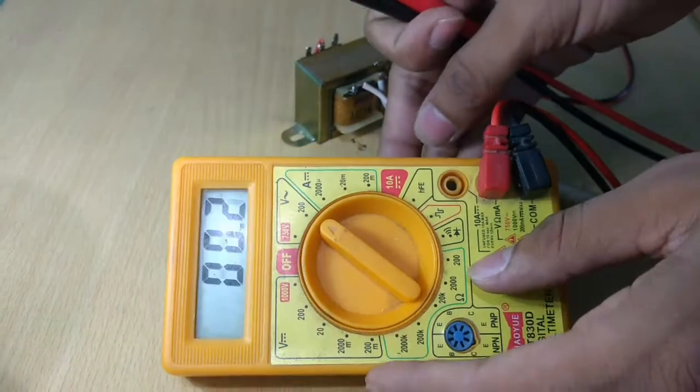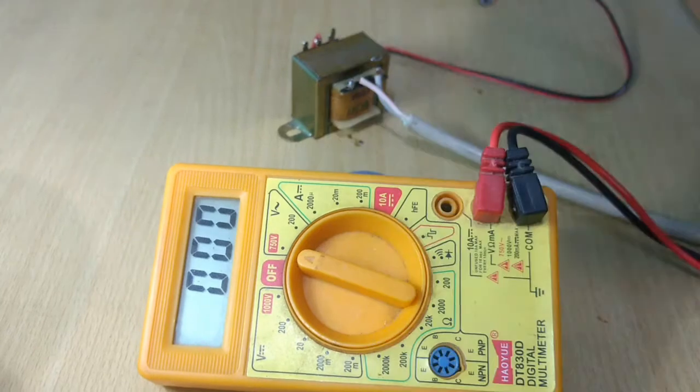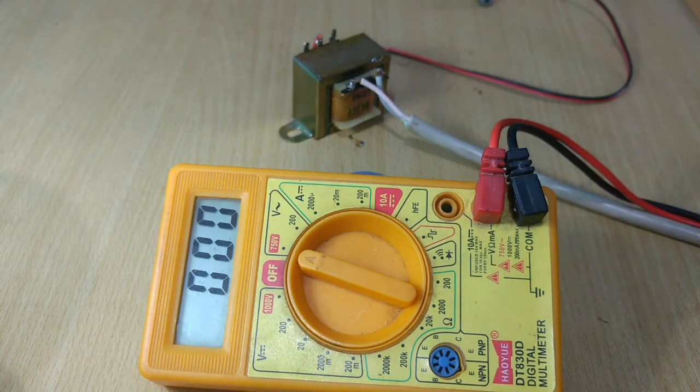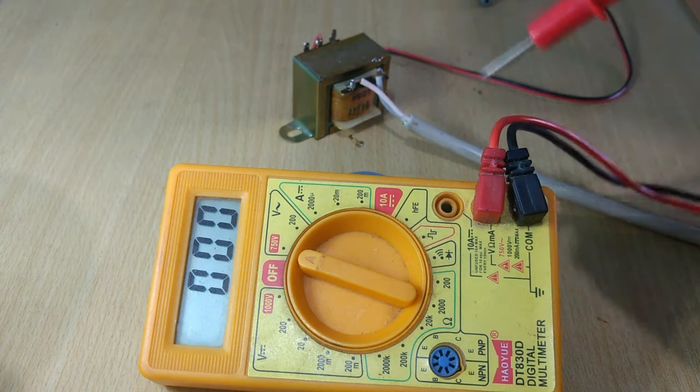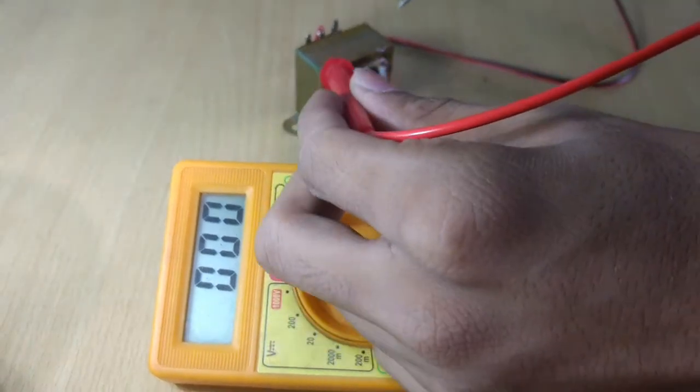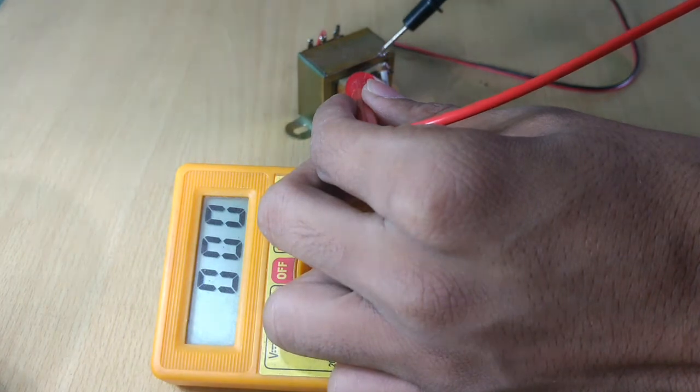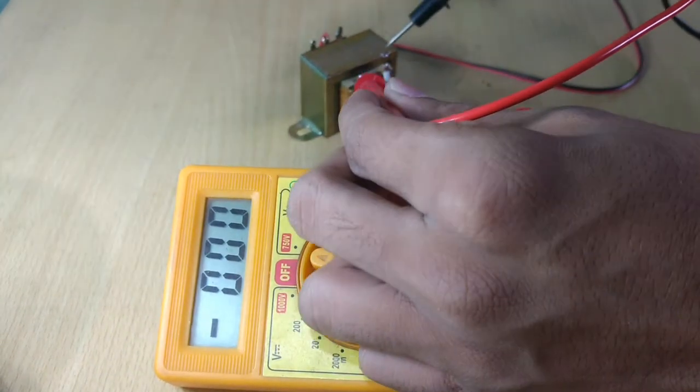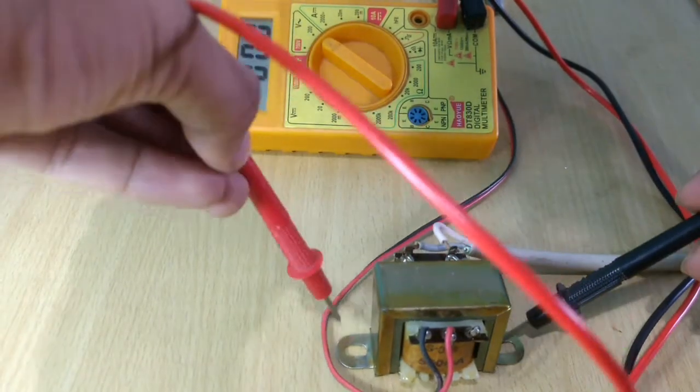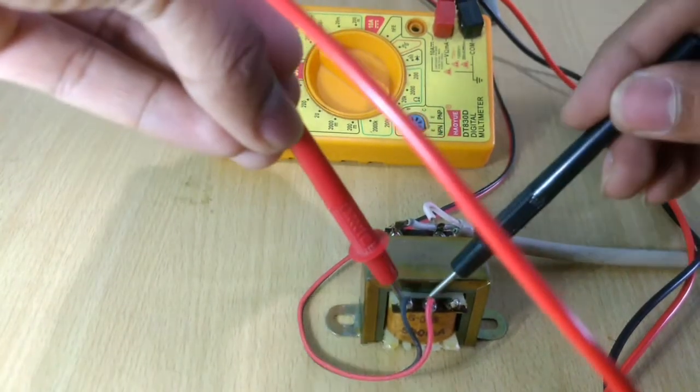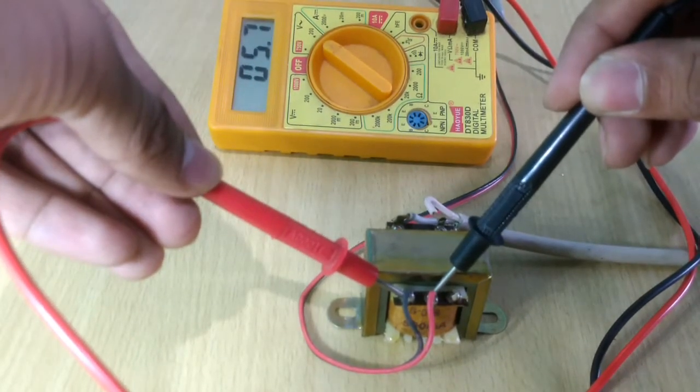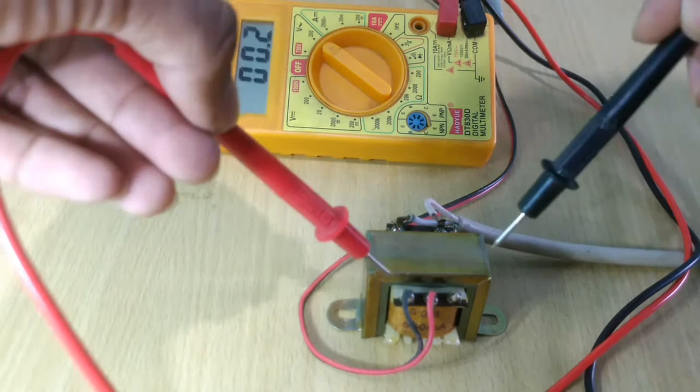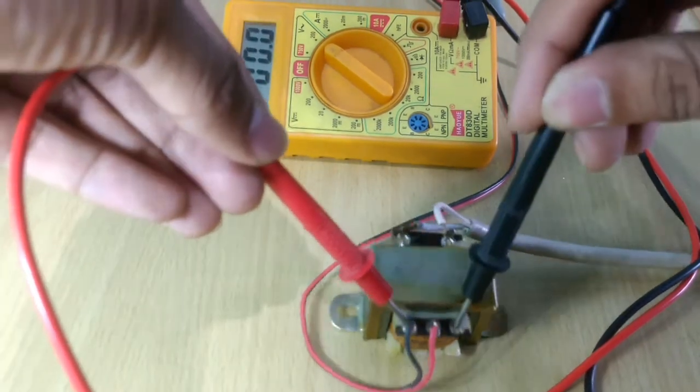So after soldering the wires properly, let us now turn on the AC mains and check the voltage input and output using our multimeter. So we can see that the input voltage is 230 to 233V AC, that is the normal household voltage. And the output voltage is 6 point some volts across the pin at the center and the pin at the side. And the voltage across the two pins at the sides is around 13.8 to 13.9 volts.